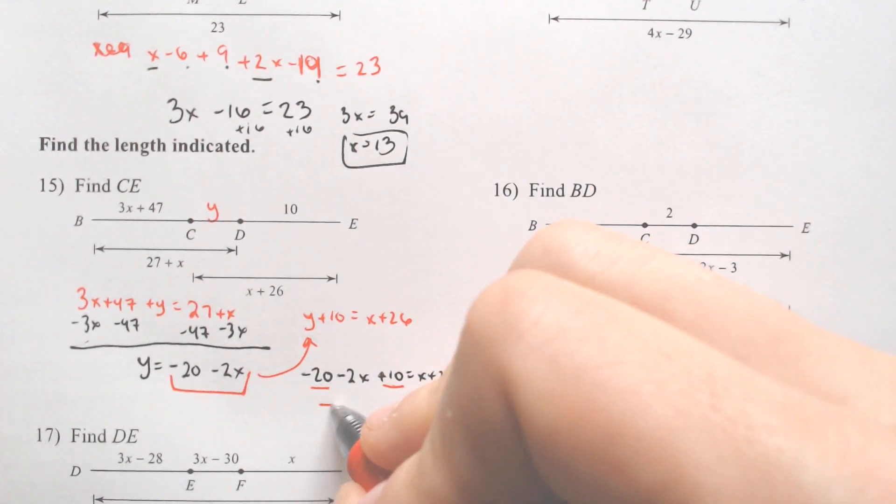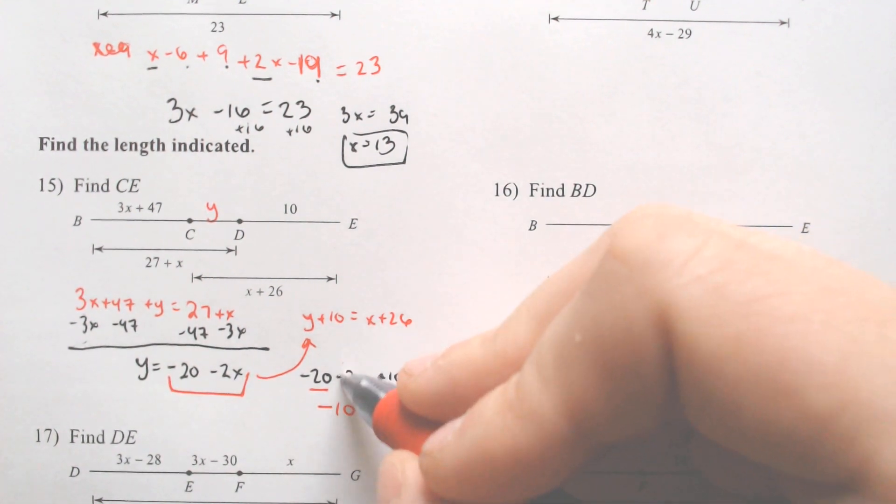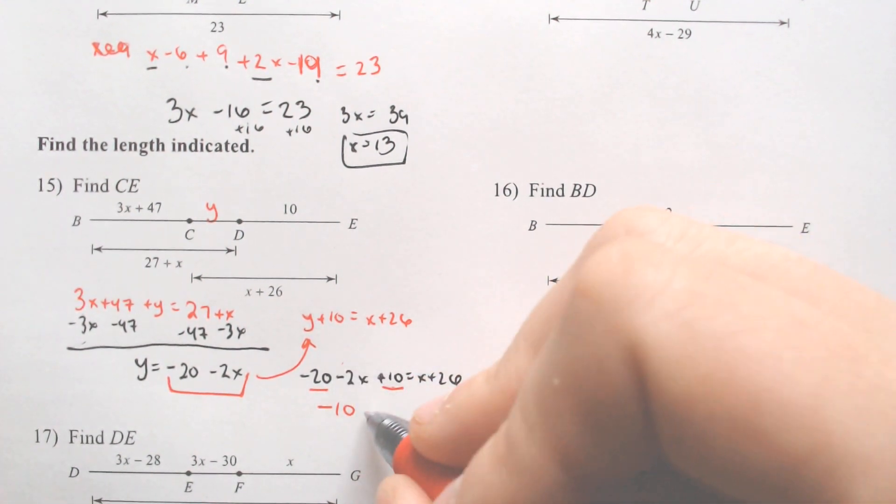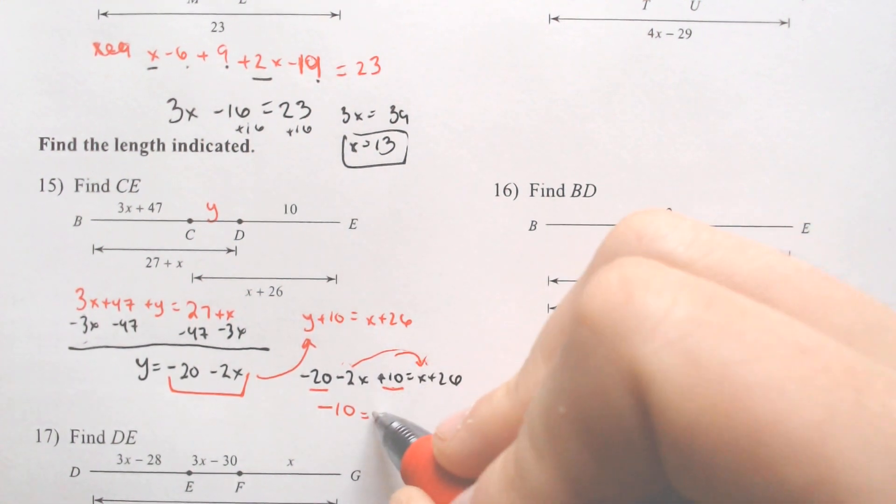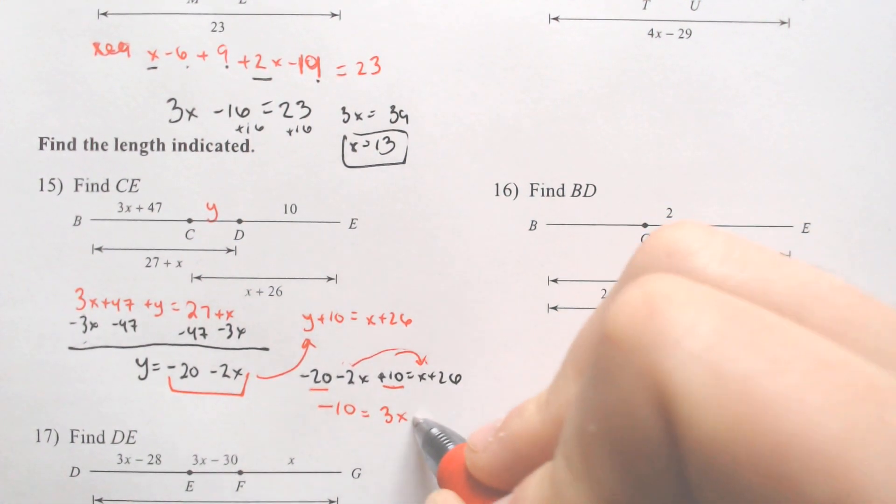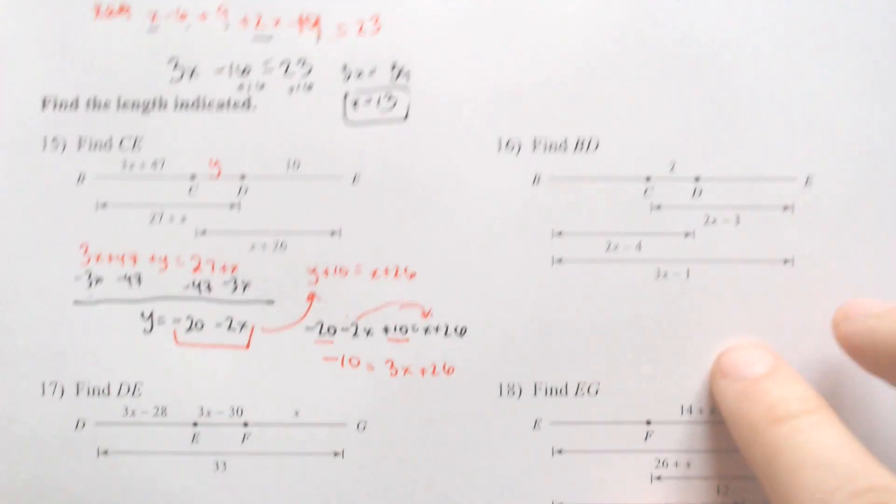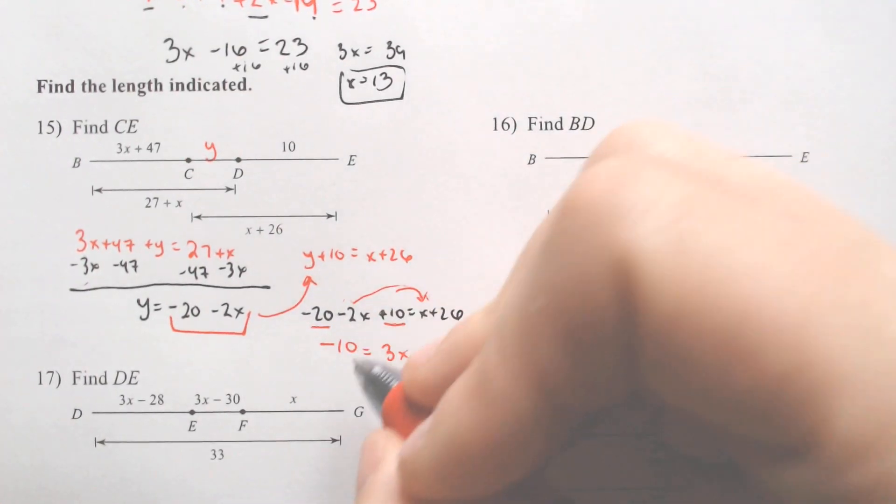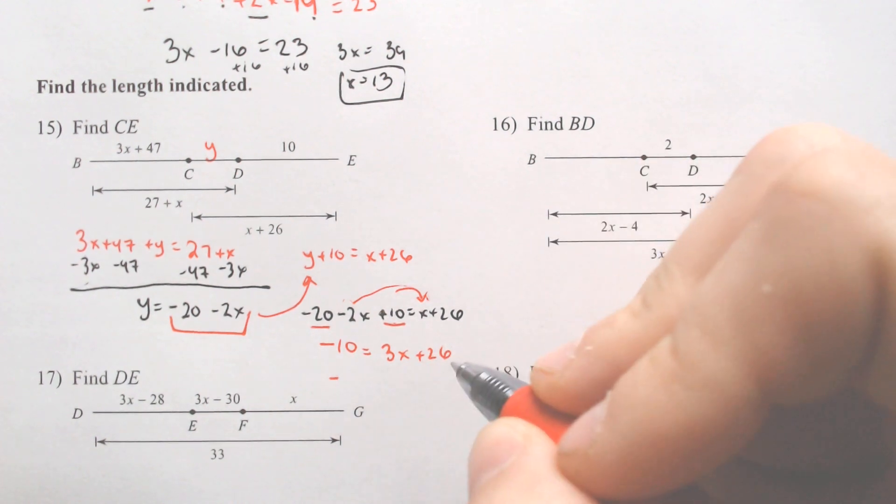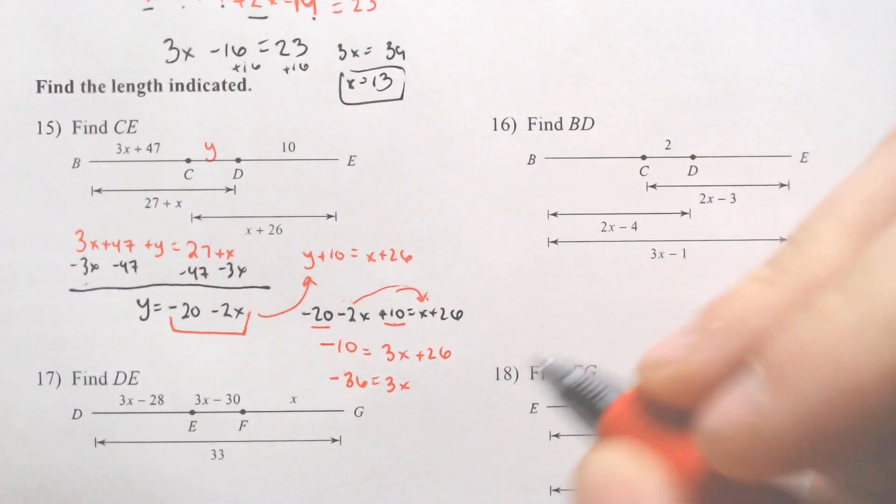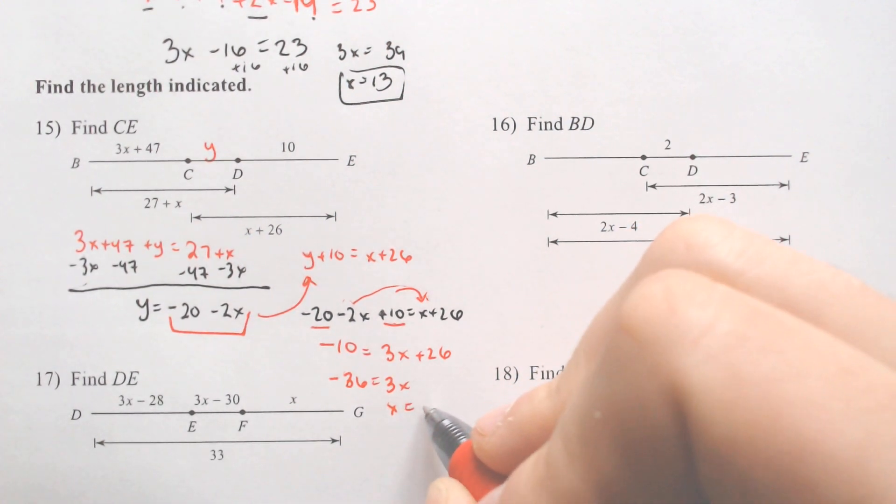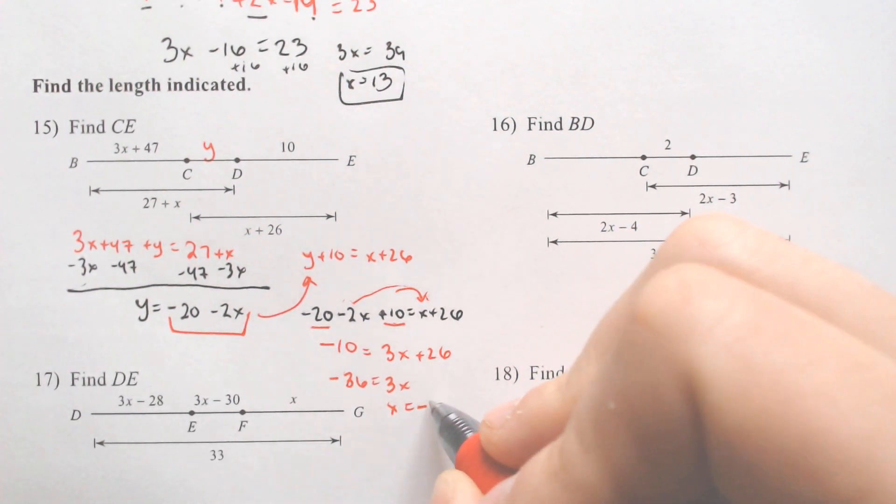Negative 20 and 10 makes negative 10. We're going to add the 2X to the other side, which I am going to do mentally. If I add the 2X right here, we would equal that to 3X plus 26. Subtract 26 over. If you subtract 26 over, you get negative 36 equals 3X, which means that X would equal negative 12.